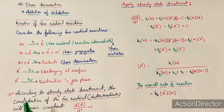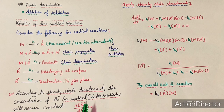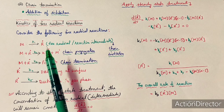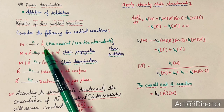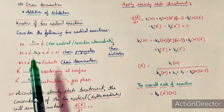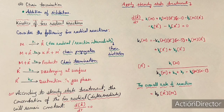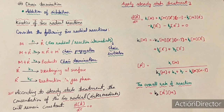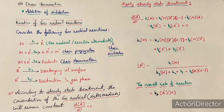We will apply the steady state treatment. According to the steady state treatment, the concentration of the intermediate — which here is the free radical — will remain constant. Because the free radical is formed and it is again used, if we apply the steady state treatment we get d[R·]/dt = 0, meaning its concentration remains constant with time.